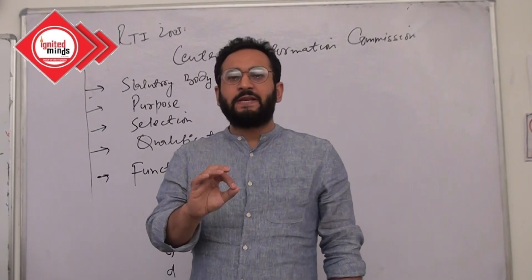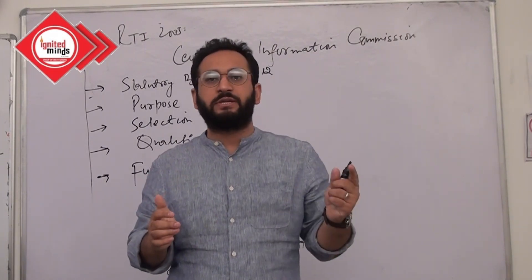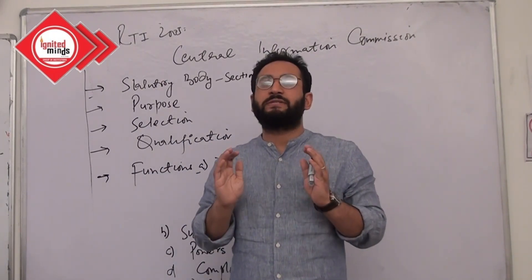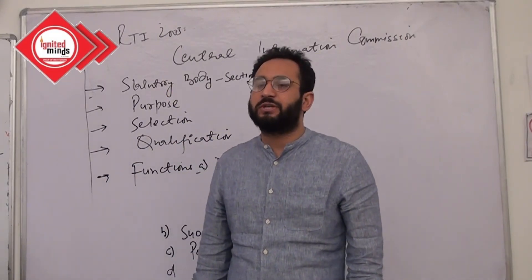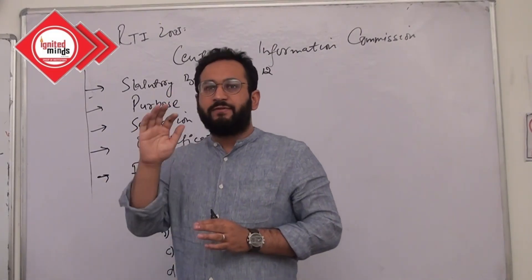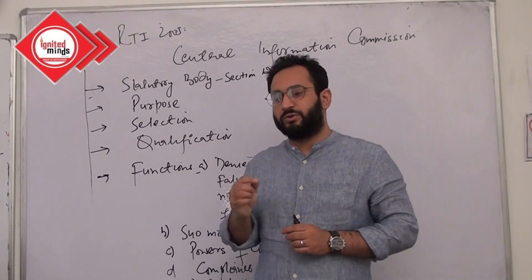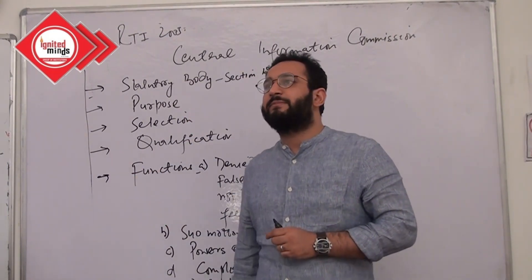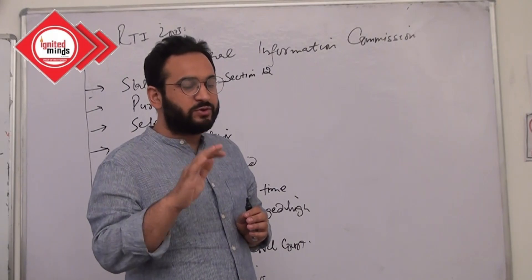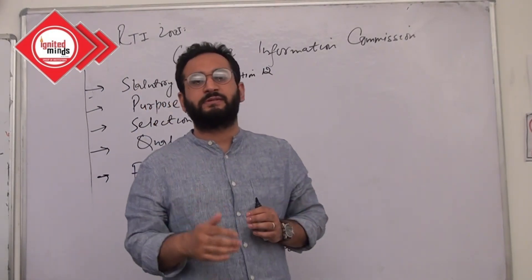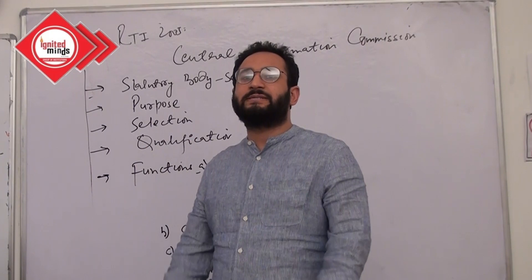Thereafter we dealt with the salient features of the act — what do you mean by information, what is the public authority, and what is the modus operandi of this act. How does this act enable citizens to acquire information from government offices. If there is any denial by the government officer, there were provisions for penalty, and in the end we dealt with exemptions from the RTI — 11 items which could not be disclosed because the matters are very sensitive. We also went through Section 8 Clause 2 and Section 22.